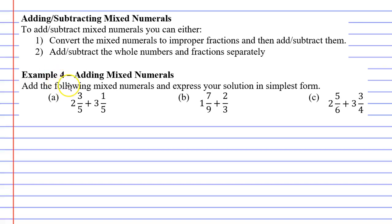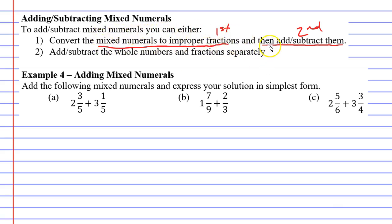In this video I'm going to complete example four and learn how to add mixed numerals. When you add or subtract mixed numerals there are two methods you can use. Method one involves converting the mixed numerals to improper fractions first and then adding or subtracting them. I'm not going to show method one because I've already done videos on converting mixed numerals and adding fractions, so there's no need. I'm going to show you method two instead.